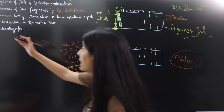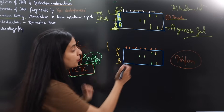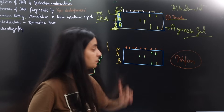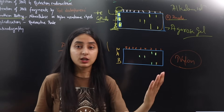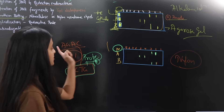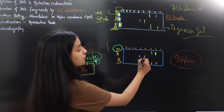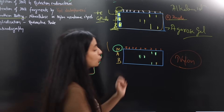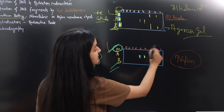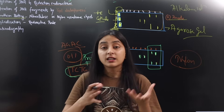The sixth and last step is autoradiography. We place an X-ray film on top of the nylon membrane sheet. Wherever there is a radioactive fragment, it will expose the X-ray film, revealing the DNA band pattern. On the X-ray film, the murderer shows bands at positions 2 and 3, person A shows bands at 4 and 5, and person B shows bands at 2 and 3. Since the murderer's pattern matches person B's pattern, person B is identified as the murderer. DNA Fingerprinting is thus used to solve criminal cases.